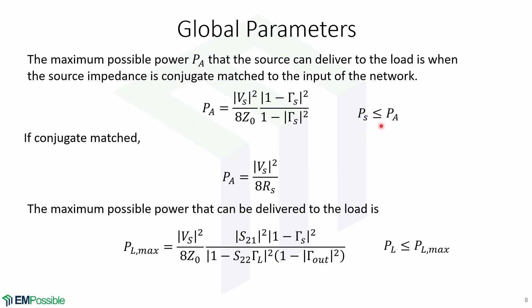So Ps is going to be equal to or less than Pa. If the source impedance is conjugate matched to the input of the network, the maximum power available is going to be this. And thus, the maximum power that can be delivered to the load is given by this expression.